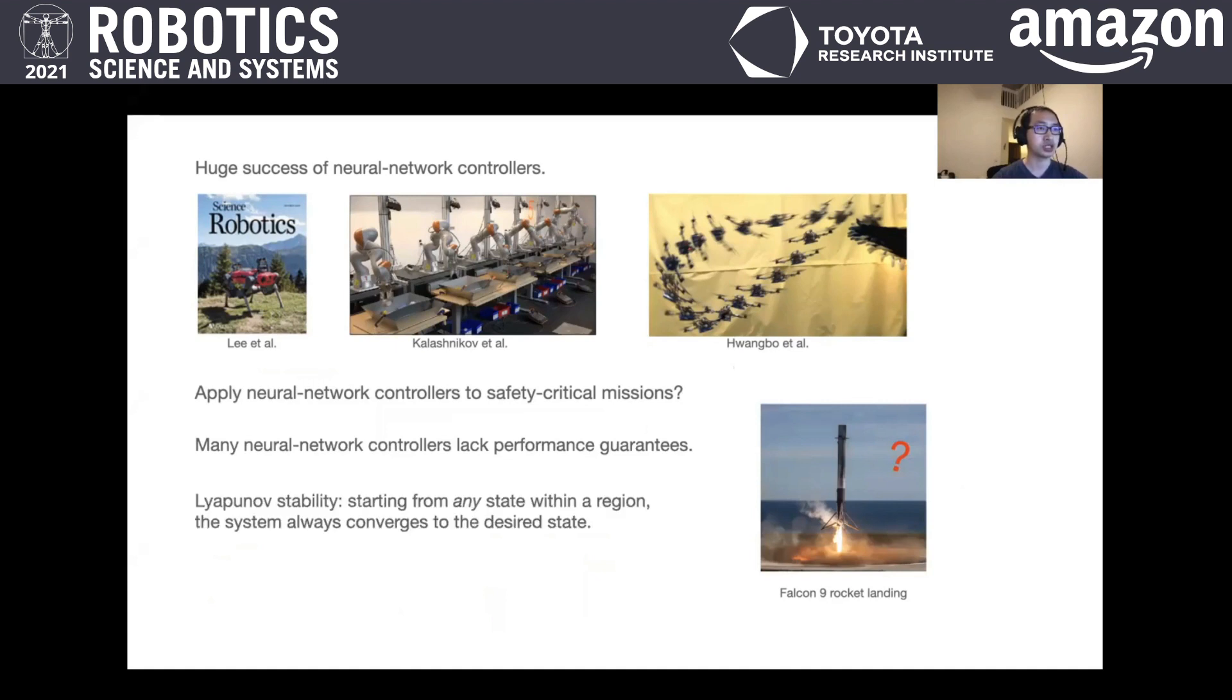Specifically, we are interested in the Lyapunov Stability Guarantee that starting from any state within a region, the system always converges to the desired state. For the Falcon 9 rocket example, that means it's guaranteed to land at the desired spot. So our goal is to synthesize a neural network controller with regional Lyapunov Stability Guarantee.